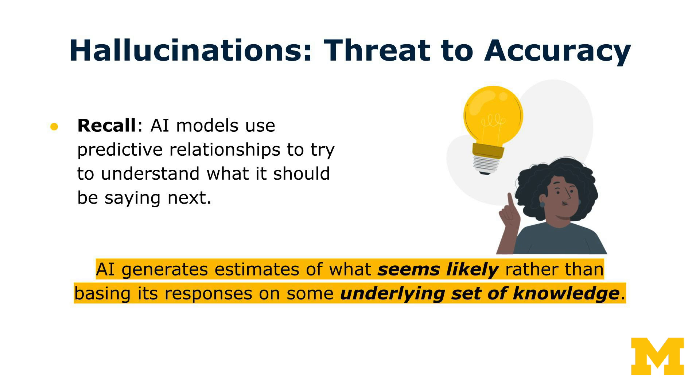That is, AI is generating estimates of what seems likely, rather than basing its responses on some underlying bedrock set of knowledge. A body of recent evidence suggests that hallucinations may be an inherent feature of AI, and although much research is focused on reducing their frequency, there may be no such thing as truly hallucination-free generative artificial intelligence.